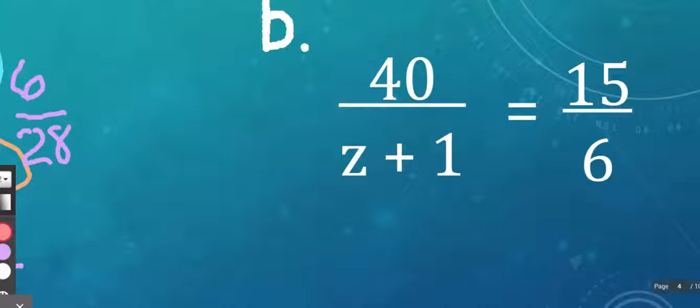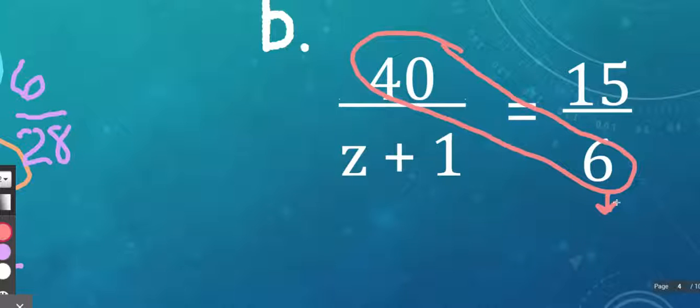So if we were to do our first step, we would take 40, our numerator, and 6, our denominator over here, and multiply those two together. So when I do 40 times 6, I get 240.